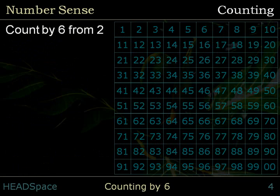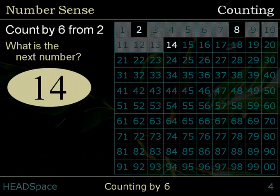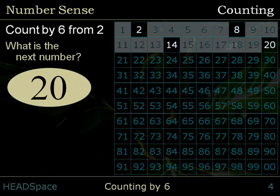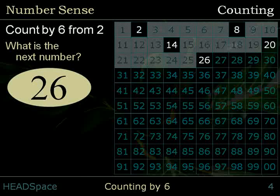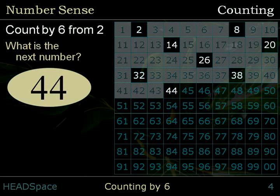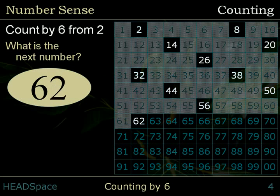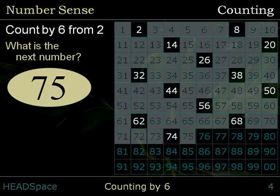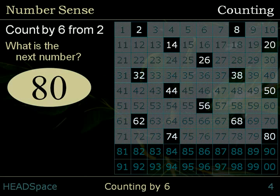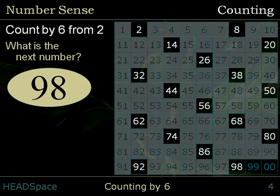Counting by 6. What is the next number? Count by 6 from 2. 2, 8... 20, 26, 32, 38, 44, 50, 56, 62, 69, 75, 80, 86, 92, 98.